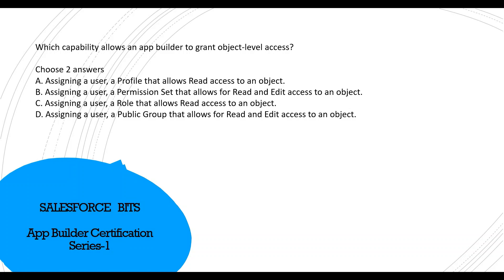We have to choose two answers: assigning a user a profile that allows read access to an object; assigning a user a permission set that allows read and edit access to an object; assigning a role that allows user read access — I don't think so, because from the role level you can only have record-level access, not object-level access; and assigning a user a public group that allows read and edit access. Public groups cannot grant object-level access either. So the correct answers are A and B.